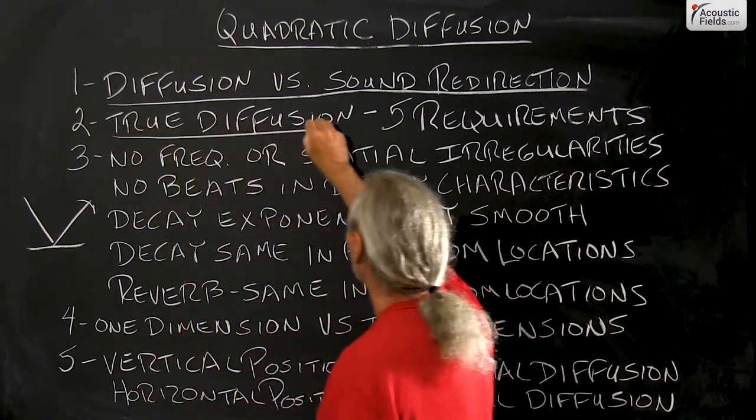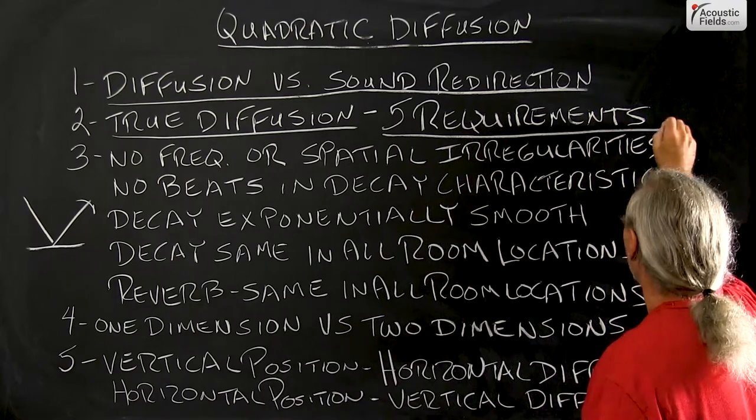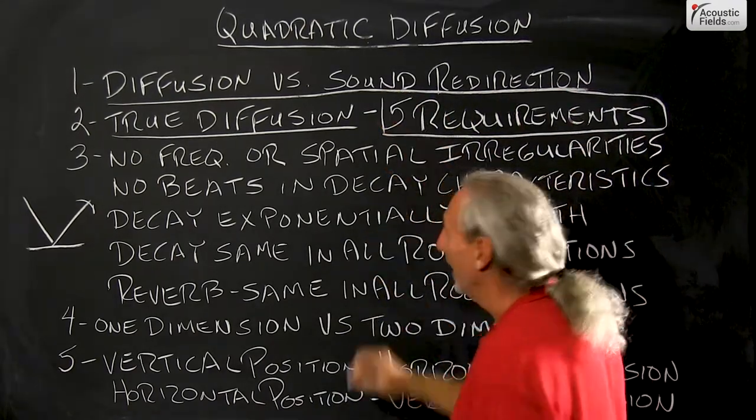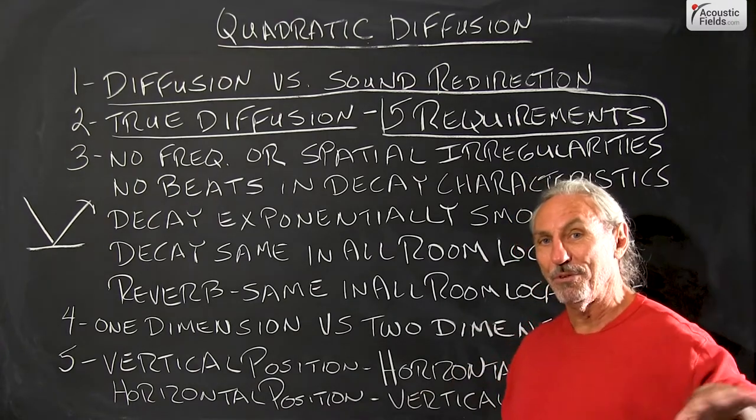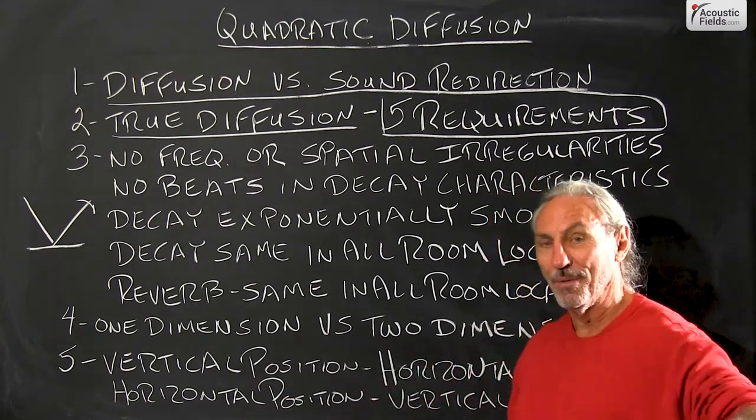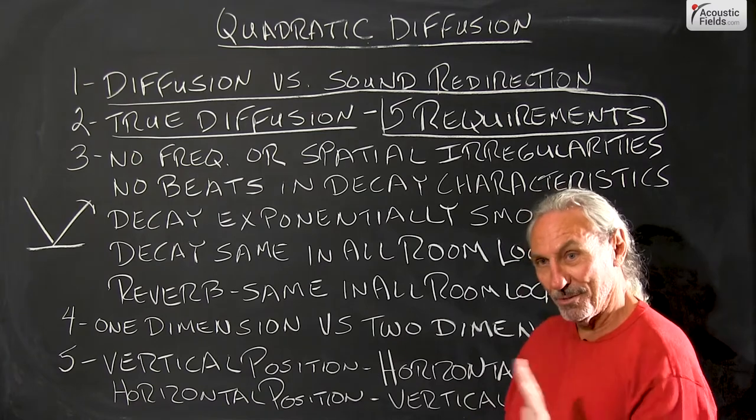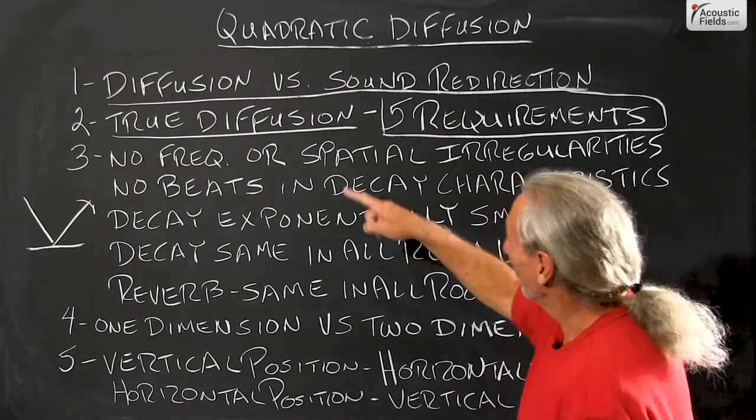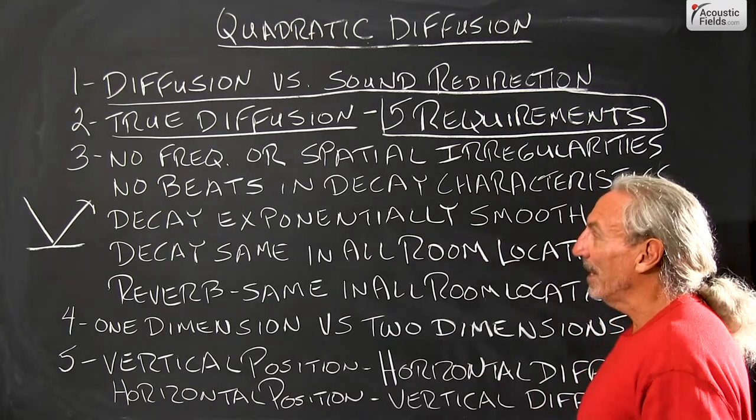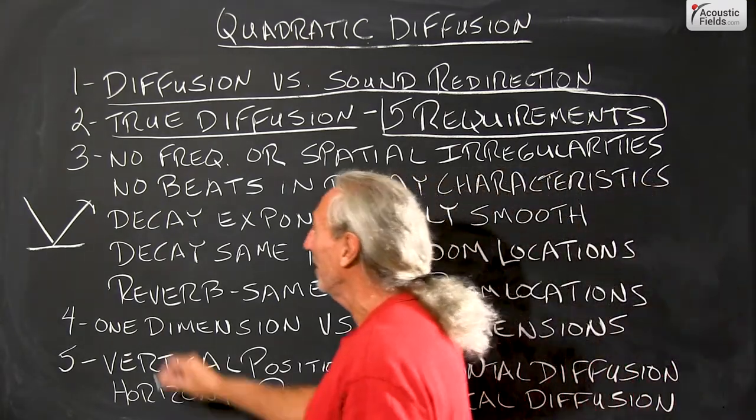True diffusion, let's use some real scientific stuff here. It has five requirements. So if we're going to have a truly sound diffused field within our room, and there's three: vertical, this one, this one, and this one, the angled one. So if we're going to do truly diffused sound field in our room, we have some criteria that we have to meet.